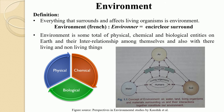As per the definition given by the Environment Protection Act in 1986, the environment includes all the physical and biological surroundings of an organism along with their interactions. In an environment, there is always interaction between physical, chemical, and biological things. Thus, the environment is defined as the sum total of water, air, and land, and the interrelationships that exist among them and with human beings, other living organisms, and material.